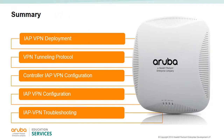In this module we saw the IAP VPN deployment for branch offices and home setups. We reviewed the VPN tunneling protocols — Aruba IPSec, Aruba GRE, manual GRE, and L2TP. We saw the controller IAP VPN configuration when using Aruba IPSec or Aruba GRE, the IAP VPN configuration, and troubleshooting commands.